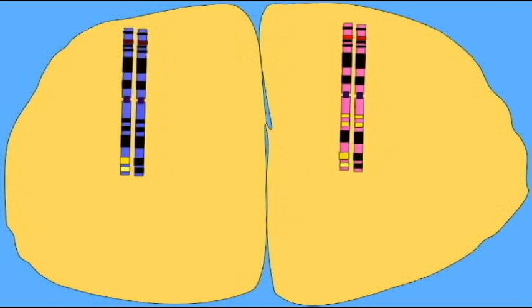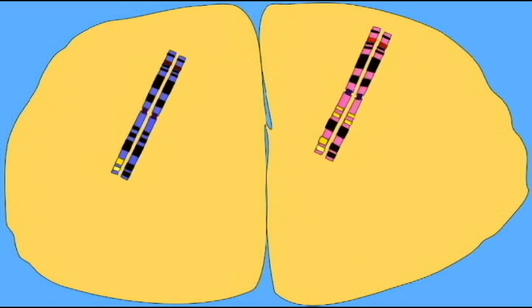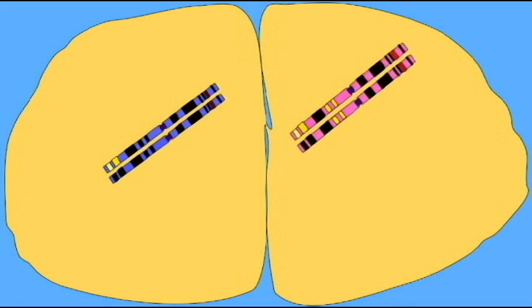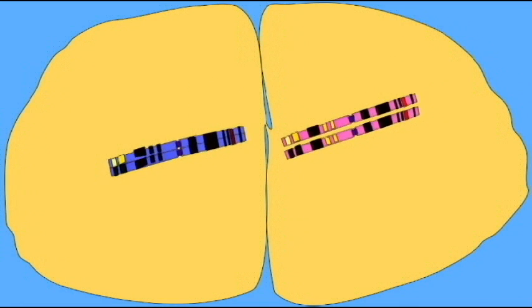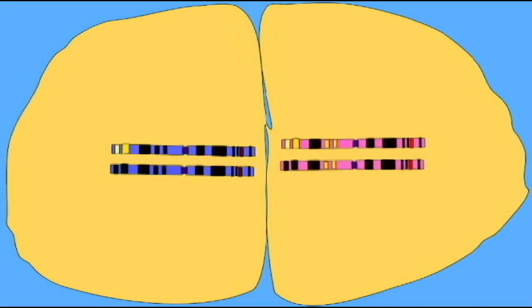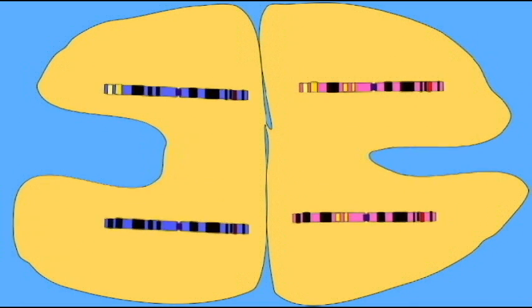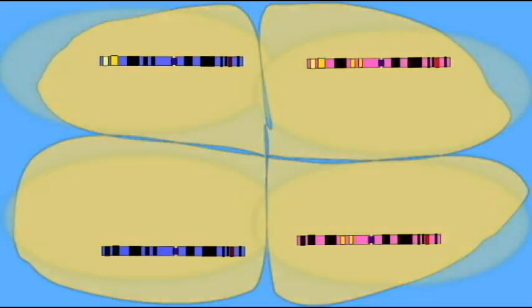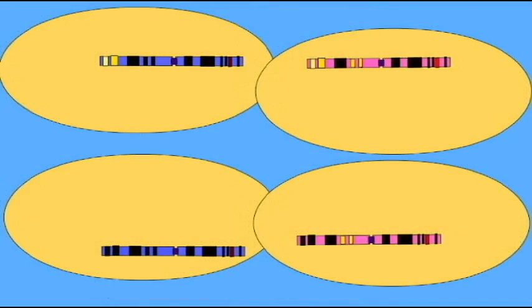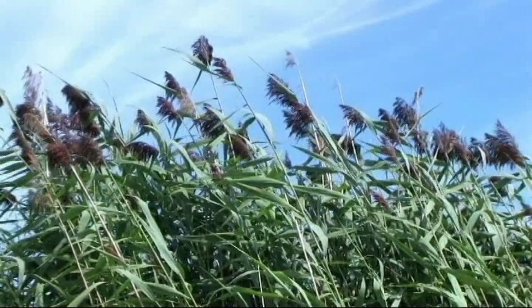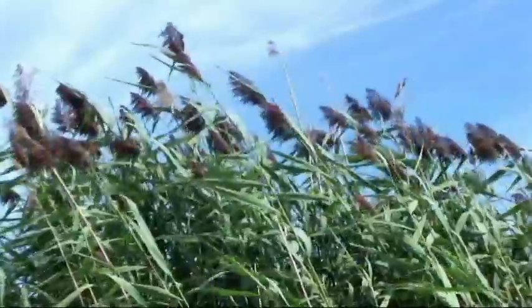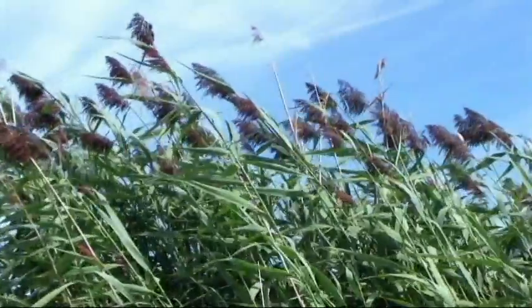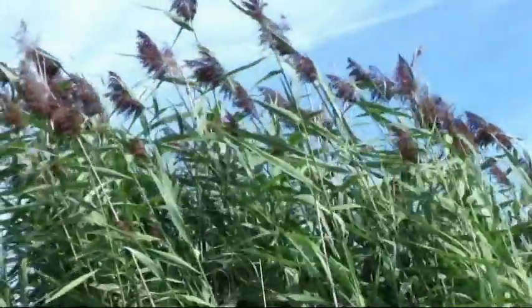It is thought that about a third of the protease genes in the human genome are serine protease genes, and there have been a large number of gene duplications. Plants may have more than 500 protease genes in their genomes.